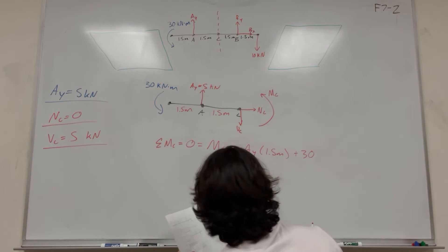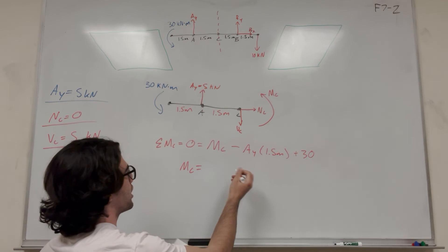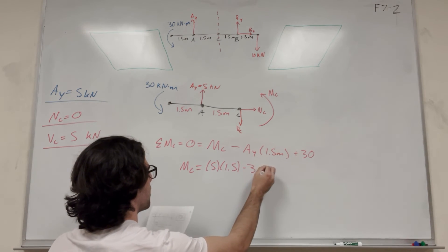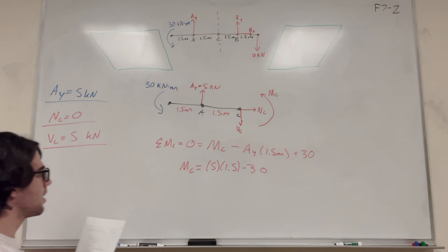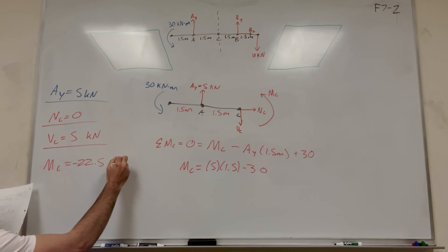So of course, you plug in A_Y and you move M_C over. So you get M_C. There's going to be a negative sign. So that's going to be five times 1.5 minus 30. And then you're going to find that moment of C is equal to negative 22.5 kilonewton meters. And there you go.